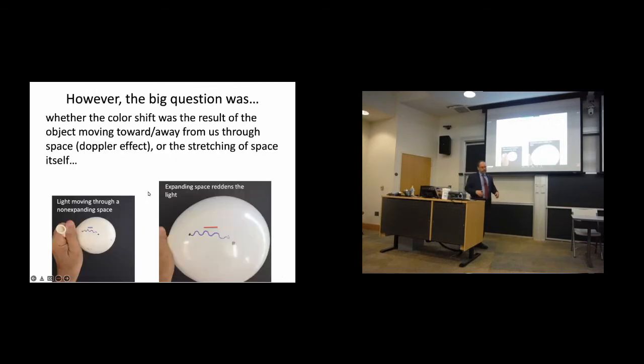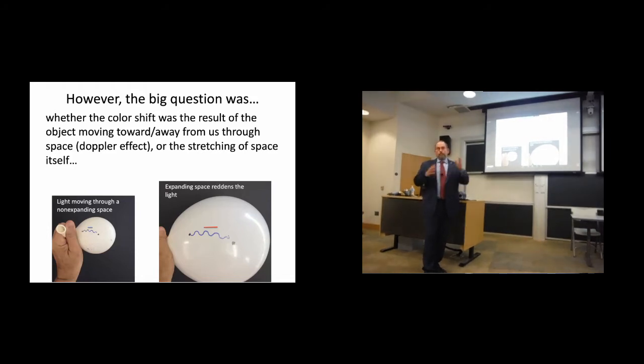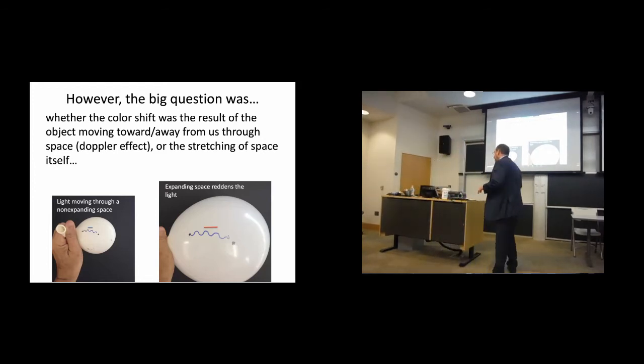The key point here is that Lemaître himself and most cosmologists, but not all astronomers, realized that this effect could be caused not only by galaxies moving through space and moving away from you, but by space itself expanding. And Lemaître in particular understood that point. And this, in part, was a confirmation for him of this metric that he had invented as the solution of the equation of general relativity. So I'm going to give you a little toy model of this. The toy model is this balloon.